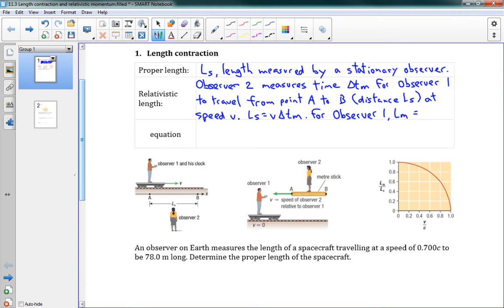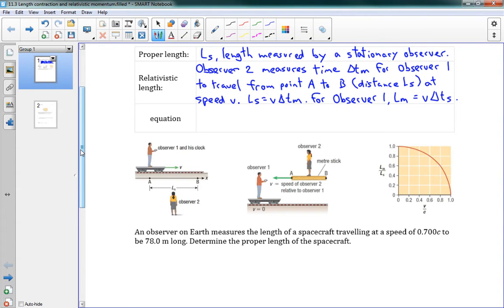Observer 1 measures Lm, which is equal to his speed times the time he seems to be going from his perspective, V delta Ts. They're both measuring some distance based on the platform speed and the time they perceive. If we plug those two into the equation for our delta T from yesterday, we get a new equation for Lm. Lm equals Ls times the square root of 1 minus V squared over C squared.